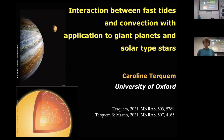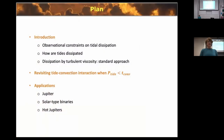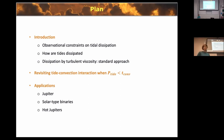This is the plan of my talk. I'm going to first tell you what observational constraints we have on how much dissipation there is when tidal interactions take place, then talk about how tides are dissipated and what people have been doing up to now, then what I have been doing the last 18 months and how I have revisited this formalism, and then apply it to Jupiter and binary stars.